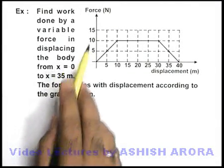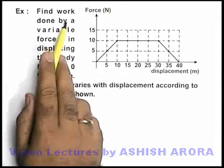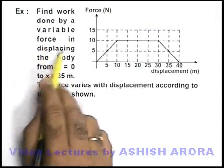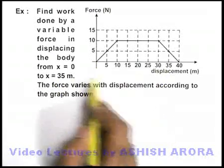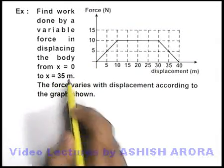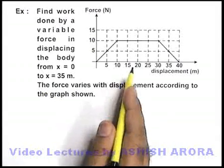In this example we are given a force displacement curve and we are required to find the work done by a variable force in displacing the body from x equal to zero to x equal to thirty-five meter. The force varies with displacement according to the graph shown here.